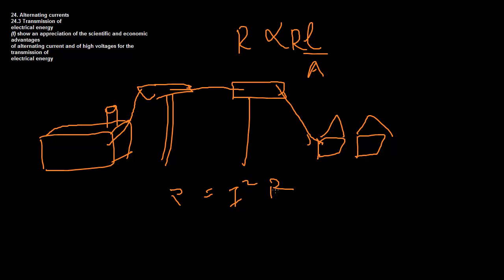Power dissipated in a wire is equal to the current squared times the resistance: P = I²R. If we have a high resistance, we're going to have quite a decent amount of power dissipation, and this is the problem. Companies don't like it when a portion of their hard-earned power — which they spent money generating and plan to sell to you — say 10% of their power is getting used up as heat. They will be losing money.